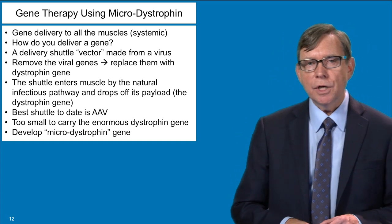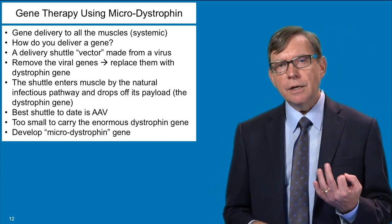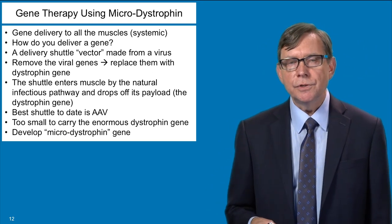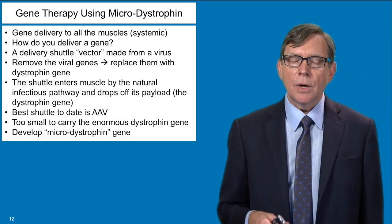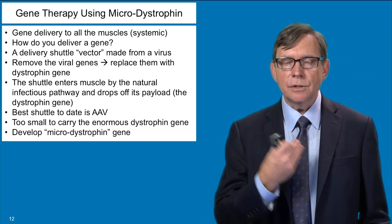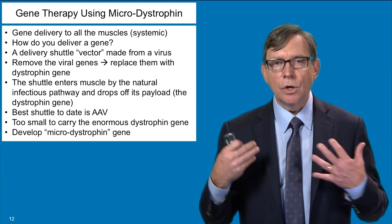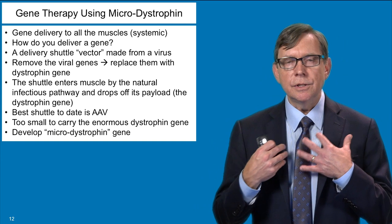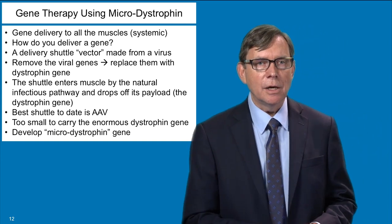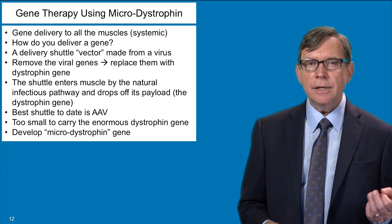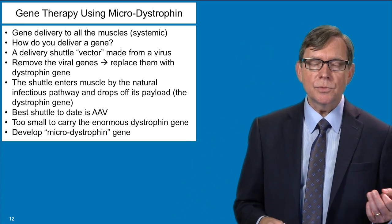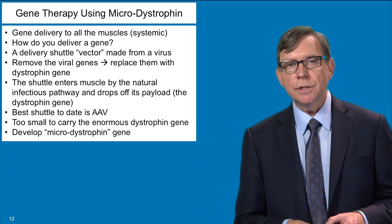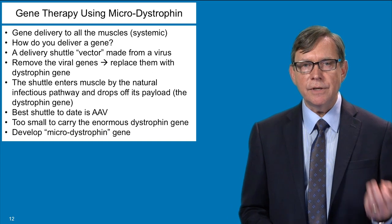Let's focus specifically on Duchenne muscular dystrophy. One of the challenges of trying to do gene therapy for muscular dystrophy is that you need to deliver the dystrophin gene to all the muscles of the body. We call that a systemic gene delivery method. You need a shuttle vehicle — almost like a bus — that can transport your new gene to the places where it's needed within muscle cells. We refer to that as a vector, and the best vectors these days are ones that are derived from viruses. They're not actual viruses we plan to use in the clinic, but gene delivery vehicles made from a virus.